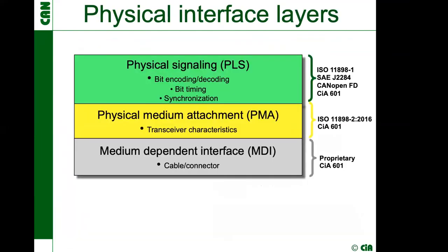If you are working on topology or CANFD network design, please contact us — every comment or proposal is welcome. To understand CANFD system design better, we take a look at the physical interface layers according to the OSI reference model, which Mr. Sitzmann already showed. The physical layer can be divided into three sub-layers, and on the right side the corresponding standards covering these sub-layers are listed. One of the important issues of CANFD system design is the setting of bit timing.